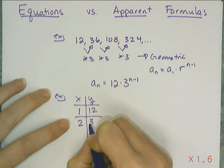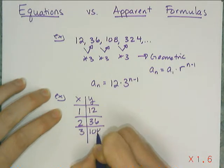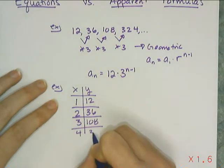x equals 2 and y is 36, x equals 3 and y is 108, and then x equals 4 and y is 324.